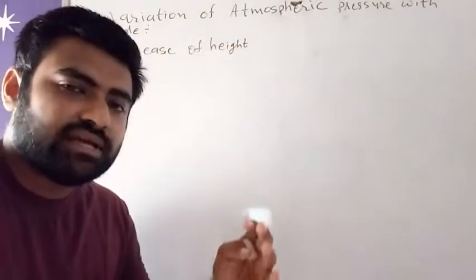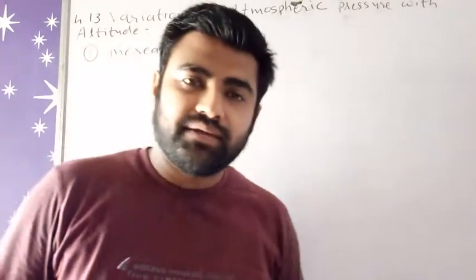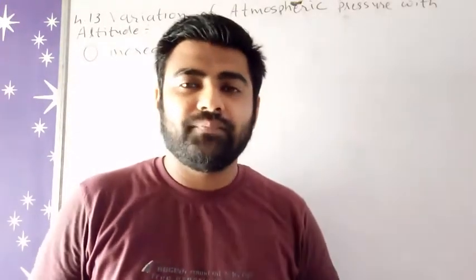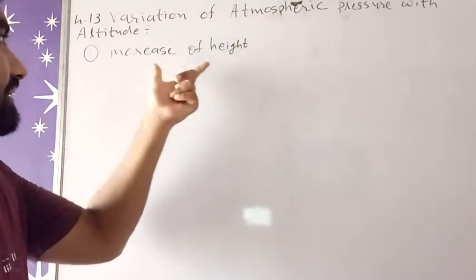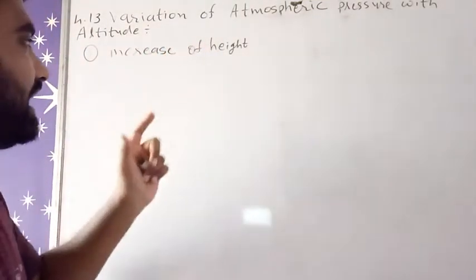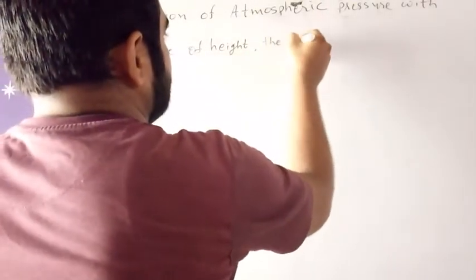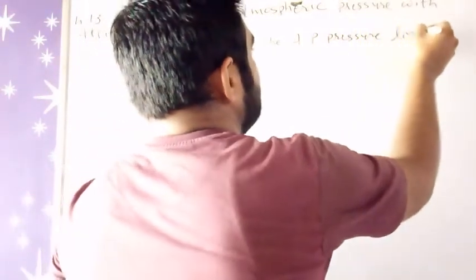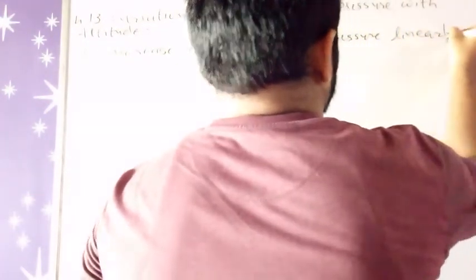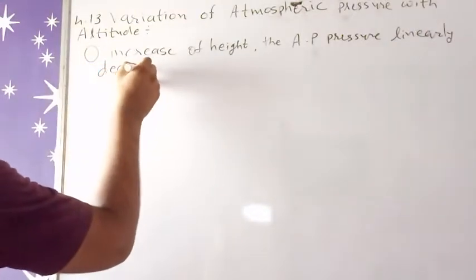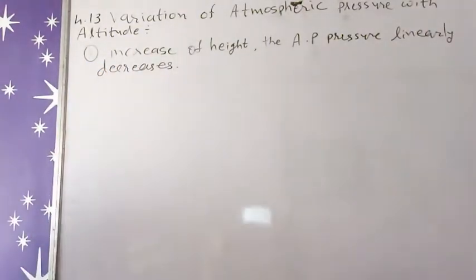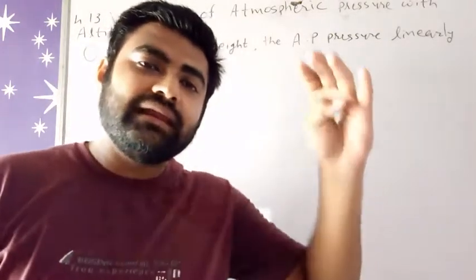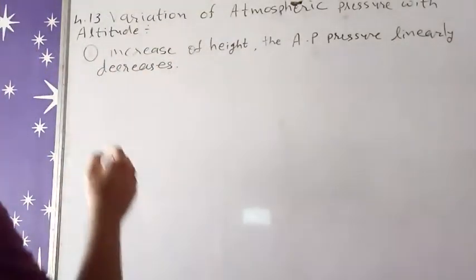As we go in the upward direction, the atmospheric pressure decreases. So with the increase of height, the atmospheric pressure linearly decreases. As height increases, atmospheric pressure will keep linearly decreasing.